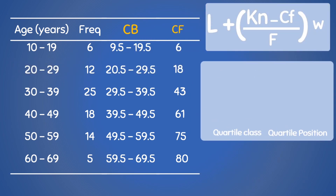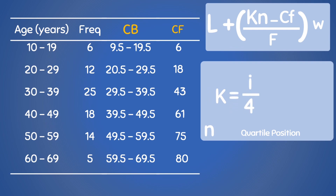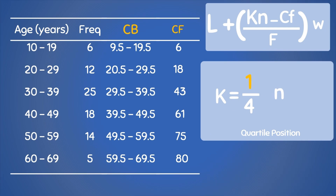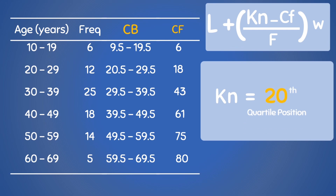To find the quartile position, remember that quartiles divide a data set into four equal parts. Since there are 80 individuals in this data, K equals I divided by 4, where I is the quartile number. For Q1, I equals 1, so K is 1 over 4. N is 80, so KN is 1/4 multiplied by 80, which gives us 20. Our quartile position for the first quartile is at the 20th individual. To find the quartile class, we find the class with the cumulative frequency that is the same as or just above the quartile position. Here, the cumulative frequency just above 20 is 43, so our quartile class is the 30 to 39 class.